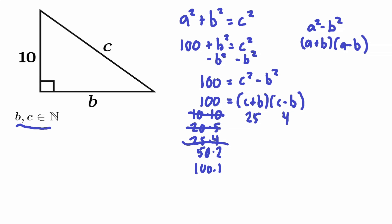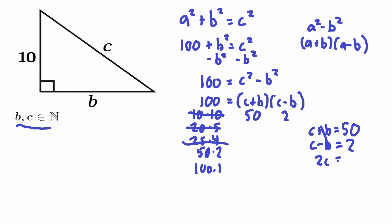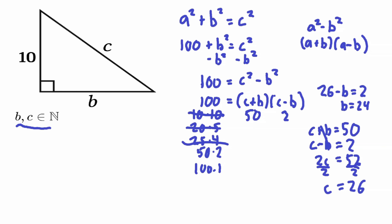That leaves two possibilities. For 50 × 2: c + b = 50 and c − b = 2. Adding gives 2c = 52, so c = 26. Then 26 − b = 2, meaning b = 24. We can verify: 26 + 24 = 50. So c = 26 and b = 24 — this looks like the right answer.